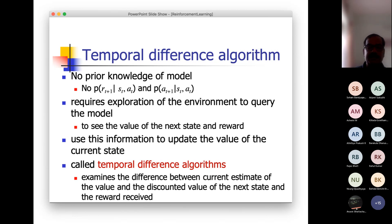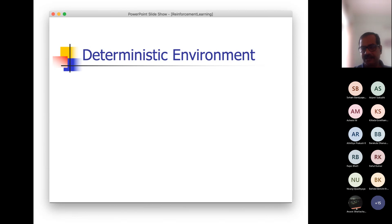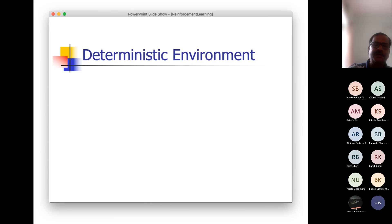These temporal difference algorithms examine the difference between the current estimate of the value and the discounted value of the next state plus the reward. If the environment is deterministic, in the simple K-arm bandit case you could stop after observing each lever. But now since you have many states, it is not so simple because finally it is a series of state-actions that determines the reward. So even in a deterministic environment, things are much more complex, and you have to follow an iterative approach for convergence.